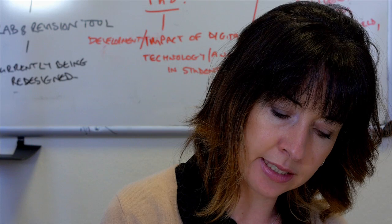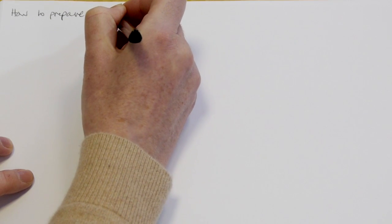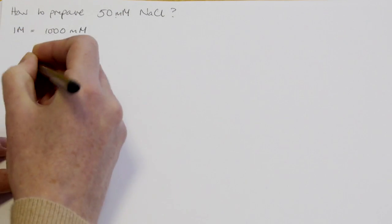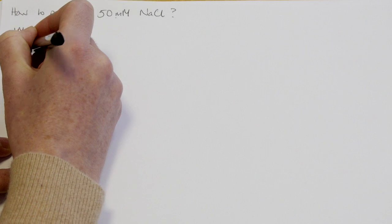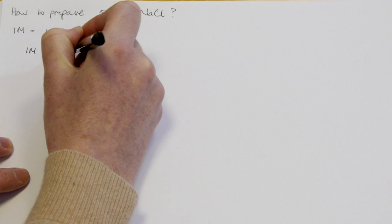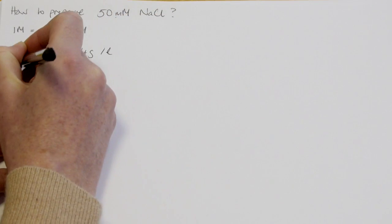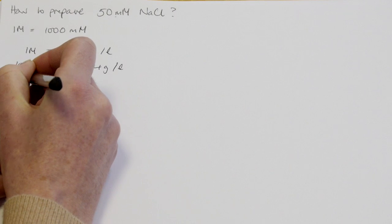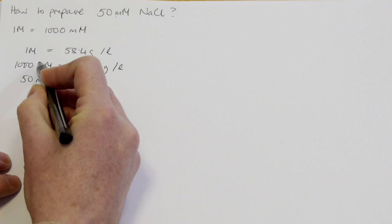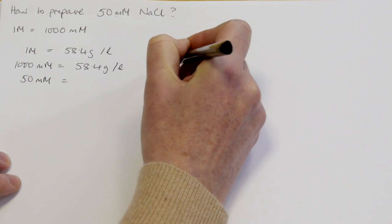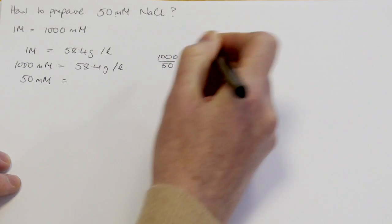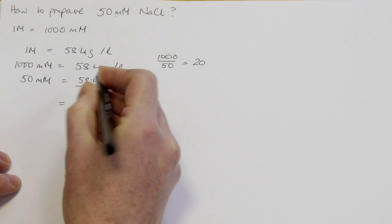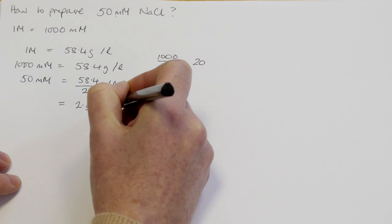We're asked to prepare a solution that is 50 millimolar sodium chloride, introducing the expression millimolar. A one molar solution is equivalent to a thousand millimolar. So knowing that one molar of salt is 58.4 grams in a litre — the same as 1000 millimolar — to calculate 50 millimolar: 1000 divided by 50 equals 20. So divide 58.4 by 20, giving 2.92 grams of sodium chloride per litre.